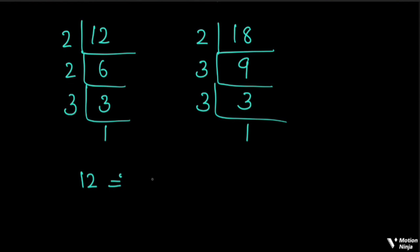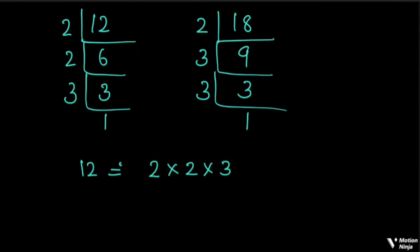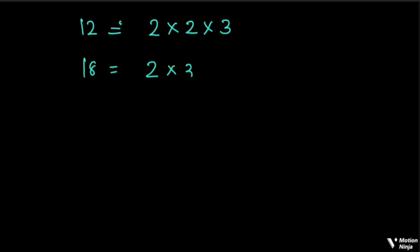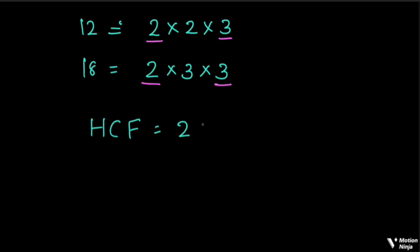The prime factors of 12 are 2 × 2 × 3. The prime factors of 18 are 2 × 3 × 3. I would like to share the common item in the prime factors — that is maximum common occurrence. One common item is 2, and one common item is 3. Therefore, HCF is equal to 2 × 3, which is equal to 6.